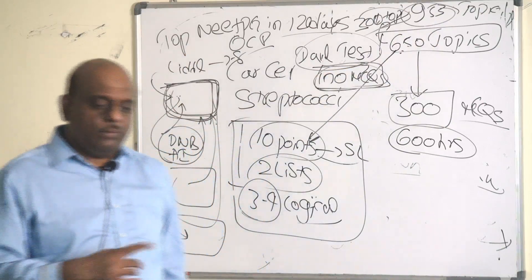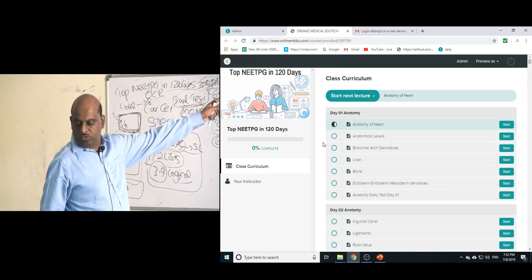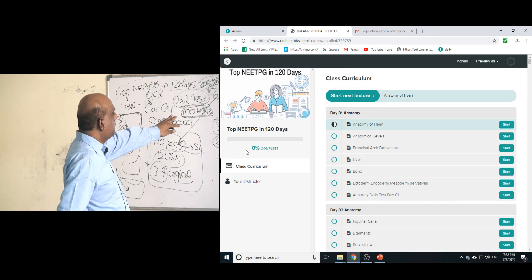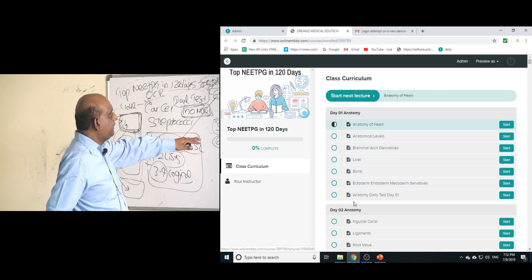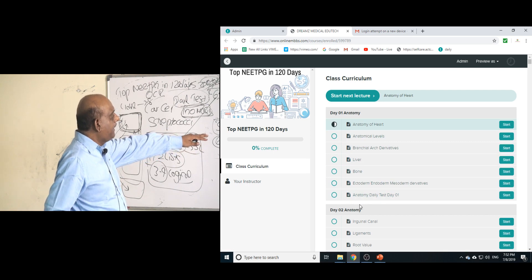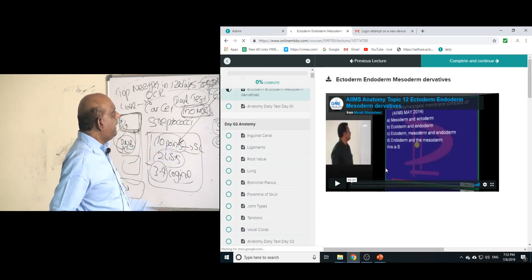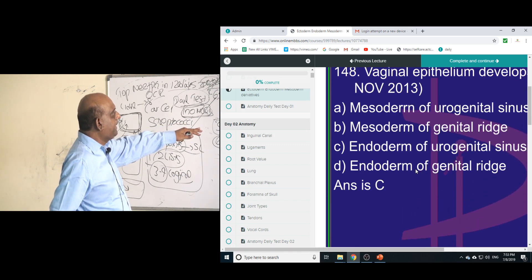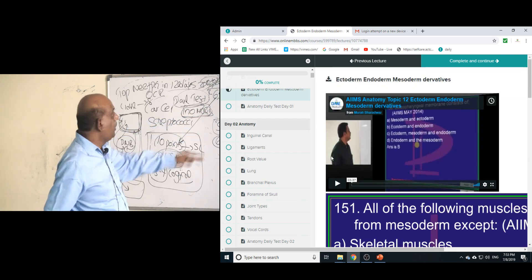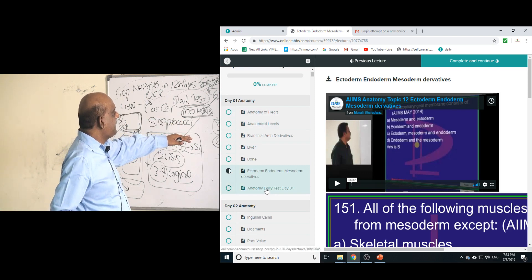Now I will show you how it looks like. You have Top NEET PG in 120 days program. So you have day one anatomy—you have the topic anatomy of heart, anatomical levels, branchial arch derivatives, liver, bone, ectoderm, endoderm and mesoderm derivatives, and a daily test. So if you go to, for example, the ectoderm, endoderm, mesoderm derivatives, then you have a video lecture. Then you have the PPT of whatever is being discussed in the video. So you have the set of lectures to finish.